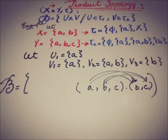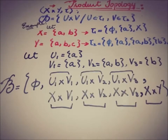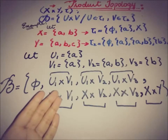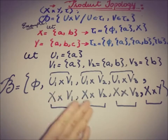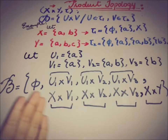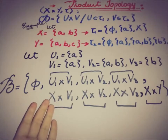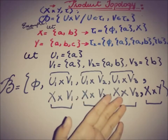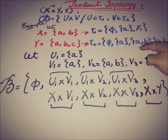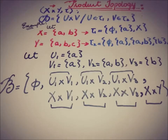So writing the elements of the base B, we have: the empty set, u1 cross v1, u1 cross v2, u1 cross v3, then since X is part of tau1 we have X cross v1, X cross v2, X cross v3, and since the full space Y is also included, X cross Y is in the basic elements. So this is the basis for the product topology of the Cartesian product X cross Y.